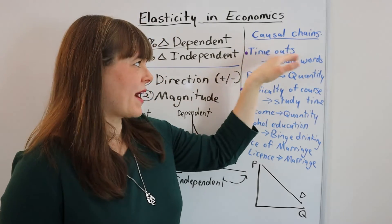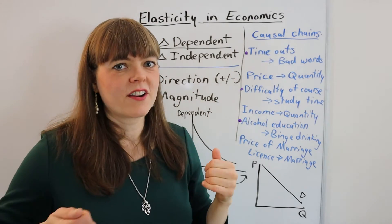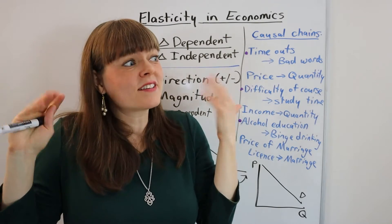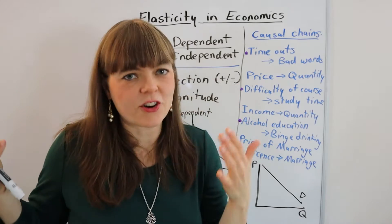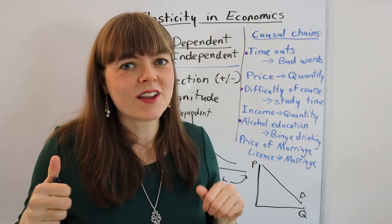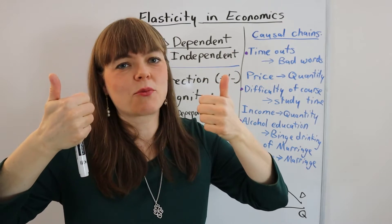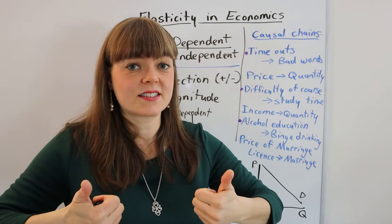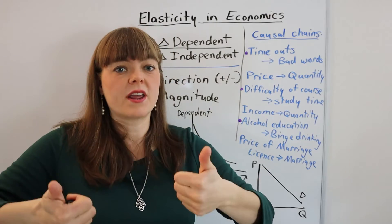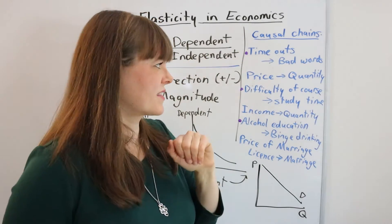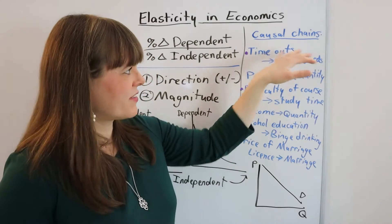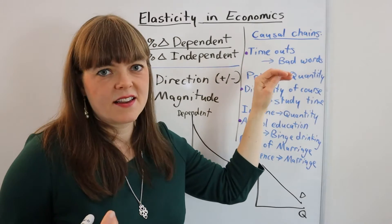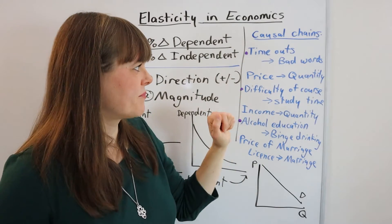We already went over the bad words and the timeouts where you increase your timeouts, you're hoping it decreases bad words. Now if the child is really cantankerous or spiteful, you may put them in a timeout and they may say a bunch of bad words in response, in which case you've got a positive elasticity - these things move in the same direction, which would be bad. And the magnitude of this elasticity, I would probably say it's fairly low, this is a fairly inelastic causal pairing.